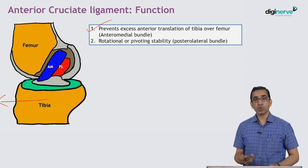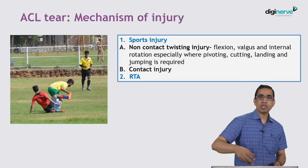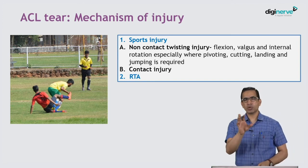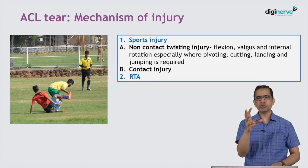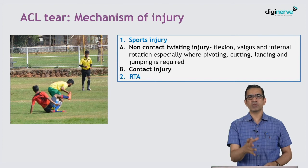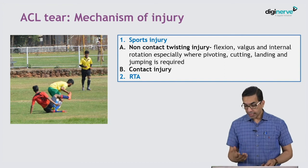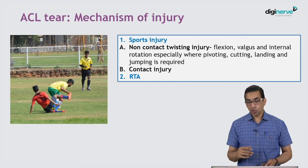The ACL also provides rotational and pivoting stability. Injury mechanisms are typically sports-related — direct contact or non-contact pivoting injuries during jumping and landing in football, basketball, and volleyball, where there are significant stresses in rotation. In our country, motorbike traffic accidents are also a common cause and can result in injury to the ACL.